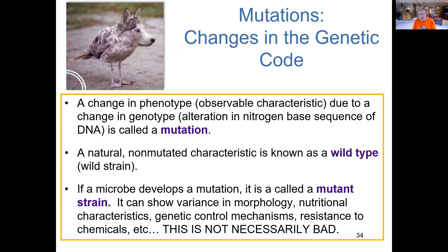The wild-type strain is the characteristic thought of as non-mutated — the natural, common characteristic. For example, skin tone in humans. We know that there are people who lack melanin in their skin — we call those albino individuals, where their skin is literally devoid of melanin. That's due to a mutation that individual inherited from his or her parents. That particular trait — no melanin — is considered the mutant characteristic. It's not common in the population; it's very rare.